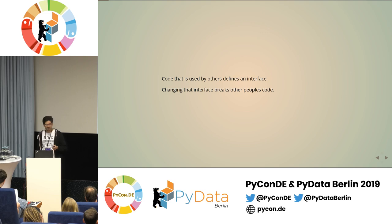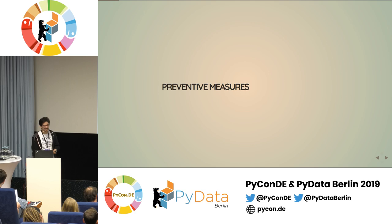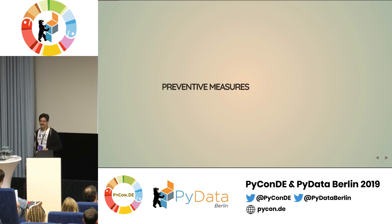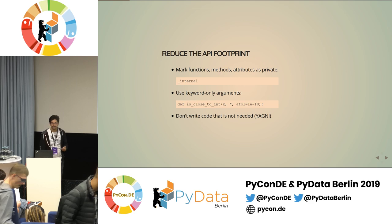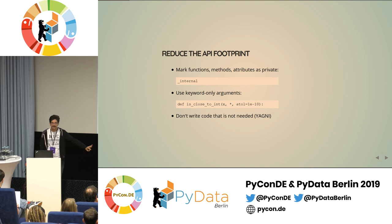So what can you do about that? First, and this is maybe the most important message in this talk: try to make the API good from the beginning. One point is reduce the footprint of the API. Really make it a habit of making your functions, methods, or attributes private — mark them with the underscore. This tells everyone it's none of their business and you're free to change that anytime. If they use it and you change it and it breaks their code, it's their fault.